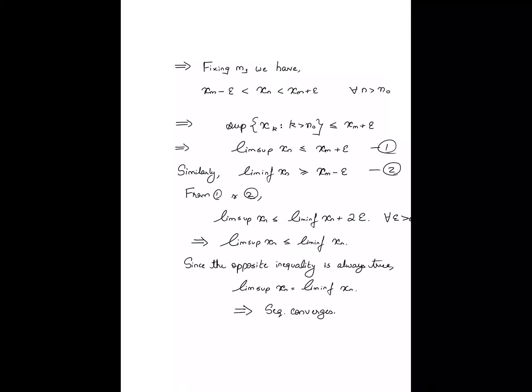Not only do the limsup and the liminf agree, but they are real, and that implies that the sequence converges. This is how you show that a Cauchy sequence is a convergent sequence. The argument is fairly straightforward: the fact that the entries are close to one another implies the supremum and infimum of the tail cannot be too far apart, which implies the limsup and liminf cannot be too far apart.